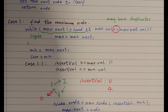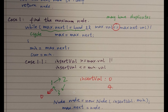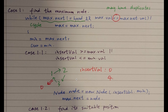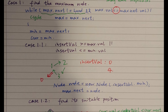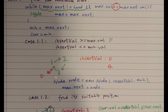We can divide the case into two situations. One is that if the insert value is greater than or equal to the max value, or the insert value is less than or equal to the minimum value, we know we do not have to iterate the node again — we just need to insert that value after the maximum node.